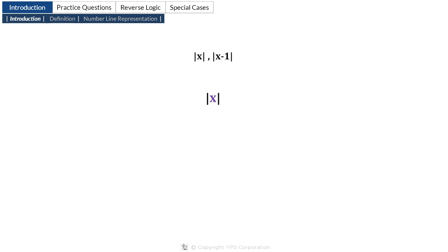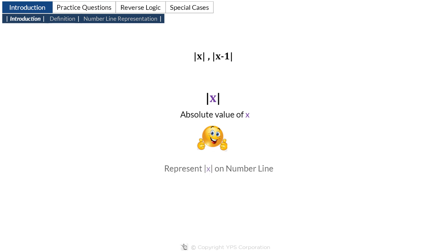Now you must have come across expressions such as these in GMAT questions or elsewhere. These are absolute value expressions. You read this expression as absolute value of x. Absolute value is a concept that most students seem to find difficult, but it is not difficult at all once you get a good understanding of the fundamentals. The key to building confidence about the concept of absolute value is being able to represent the absolute value of x on the number line, and we will soon see how to do that.